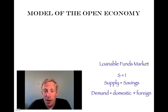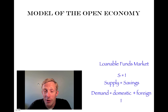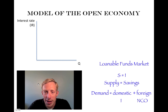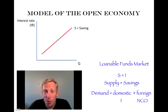So one side of our equation is going to be supply — savers. The demand side, the investment side, is going to have two parts: there's investment, which is domestic, and there's net capital outflow, which represents the foreign part of investment. If we draw out our graph for the loanable funds market, we have the interest rate on the y-axis, quantity on the x-axis, an upward sloping supply curve for the savers, and a downward sloping demand curve which is investment plus net capital outflow.